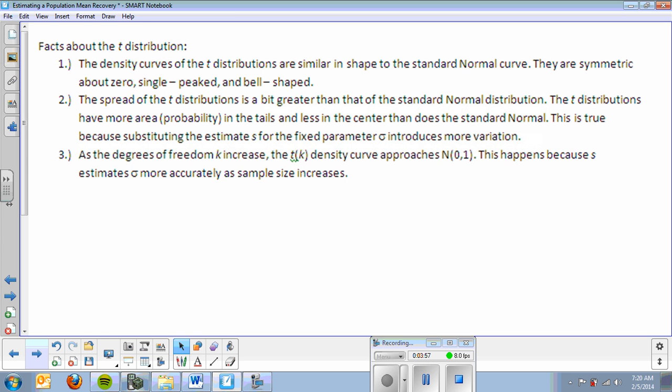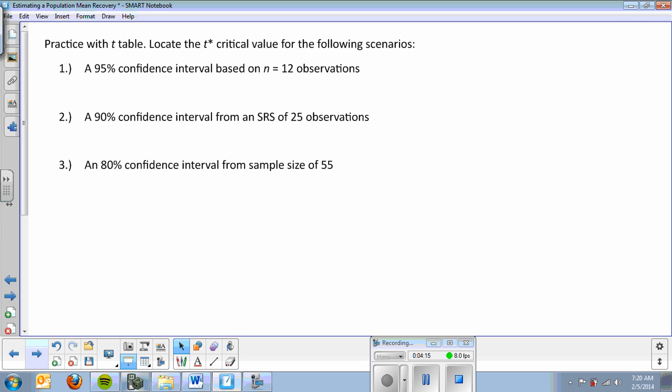Here's some facts about the T distribution. You can read those. Basically, it's symmetric, single-peaked. It has more variation than a normal distribution. As N increases, the graph gets closer to a normal, and S estimates sigma more accurately as the sample size increases. Let's practice using that T table.